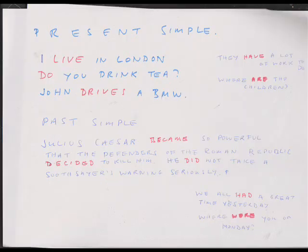We now come to consider the simple tenses — so-called present simple and past simple. 'I live in London' — we have no problem with combinations because there's only the verb 'live'; that is in the present simple tense. 'Do you drink tea?' — 'do' in the red, or first position, indicates the present simple. 'John drives a BMW' — of course, with he, she, and it, an S is placed on the end of the verb in the present simple tense.